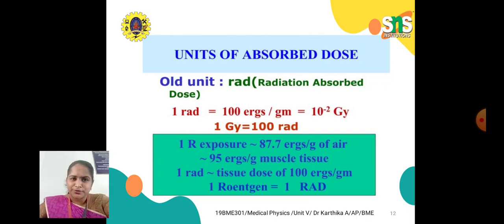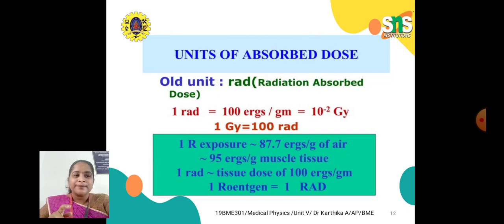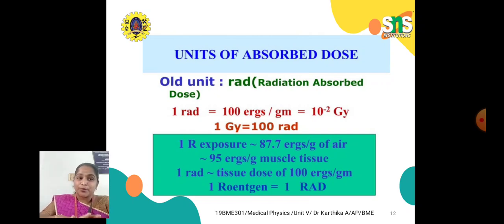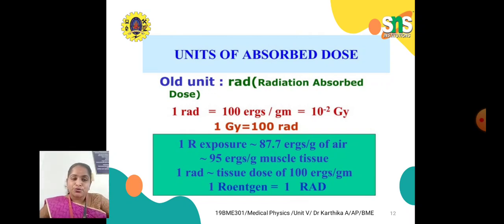The older unit of absorbed dose is RAD — radiation absorbed dose — where 1 RAD equals 100 ergs per gram, approximately equal to 10⁻² Gray. Therefore, 1 Gray equals 100 RAD. One Roentgen exposure is approximately equal to 87.7 ergs per gram of air and approximately 95 ergs per gram in muscle tissue.